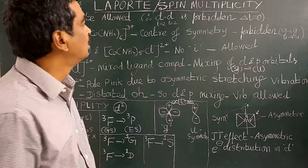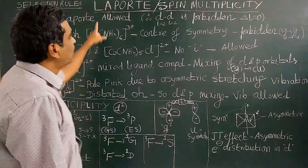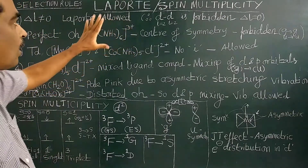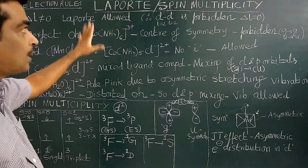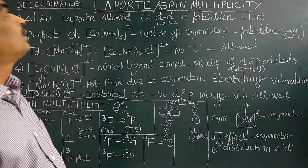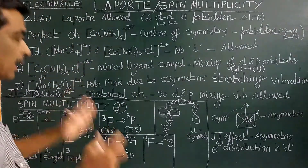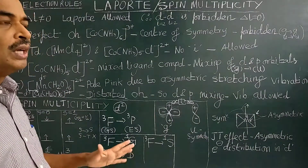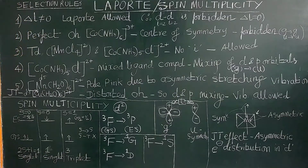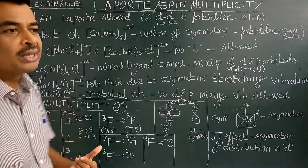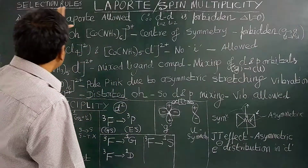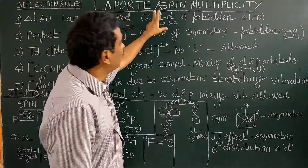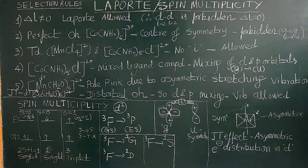Good morning. Today we will study the selection rules for electronic spectra of transition metal complexes. What are the selection rules to explain the electronic spectra of coordination complexes or transition metal complexes? There are two important spectroscopic selection rules: the Laporte orbital selection rule and the spin multiplicity rule.